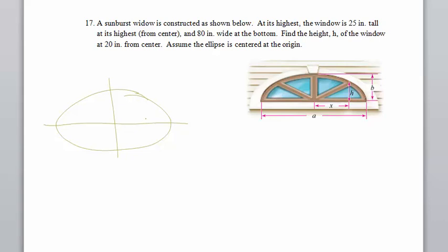And then the information. From its highest point, at its highest, the window is 25 inches tall. So that's right here. And that's the point 0, 25, which means we're down here at 0, negative 25.